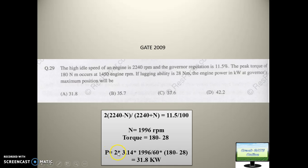Power value is 2 times pi times N times T. So 2 times 3.14 times N. Since you have to keep all values in SI units, 1996 divided by 60 because it is RPM, you will convert it into revolutions per second. So 1996 upon 60 times Newton-meter, which is 180 minus 28. When you solve it, you will get the power value of 31.8 kilowatt. Like this they are using governor regulation or governor sensitivity to calculate the final RPM of the engine and ultimately the power of the engine.